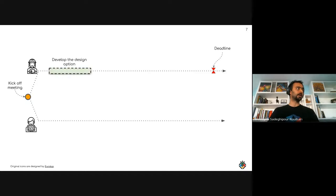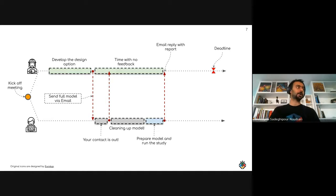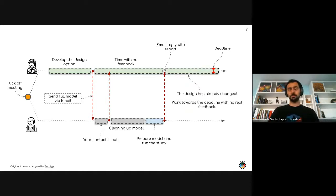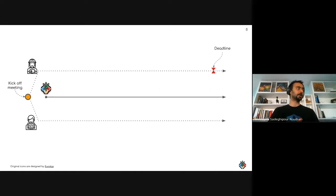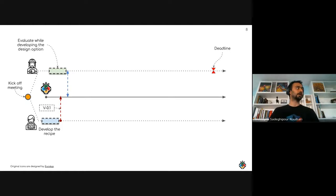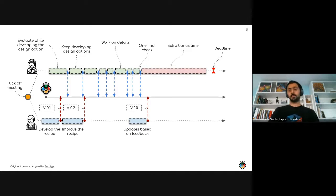The goal is to move away from the traditional workflow where architects and engineers wait on each other for long periods, send files, and spend a long time cleaning models. This creates a 'two-week no-feedback gap,' which results in analysis not being effectively integrated with the design process. With Pollination, consultants deploy recipes and designers send only the analytical model — not the full Revit or Rhino model — so everyone does what they're good at.